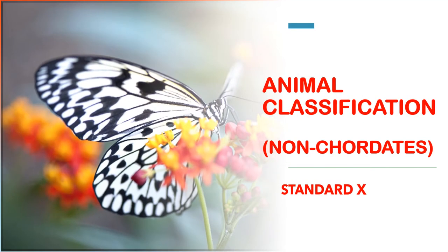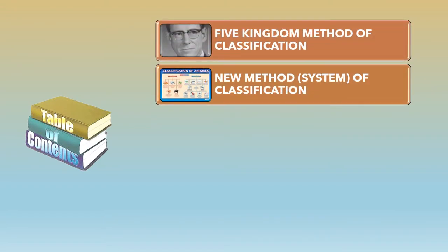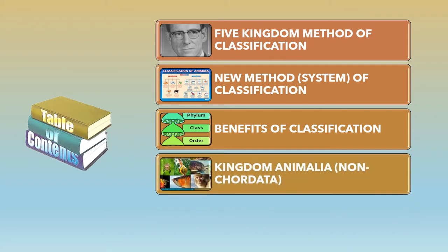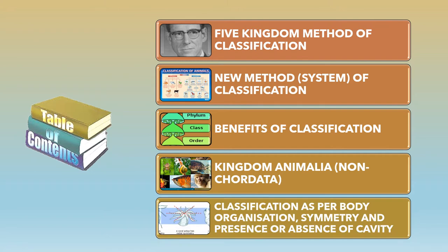In this video, we will study about the classification of animals called non-chordates, the five kingdom method of classification. We will also study the new method or system of classification, benefits of classification, the whole non-chordata, and classification as per body organization, symmetry, and the presence or absence of body cavity.